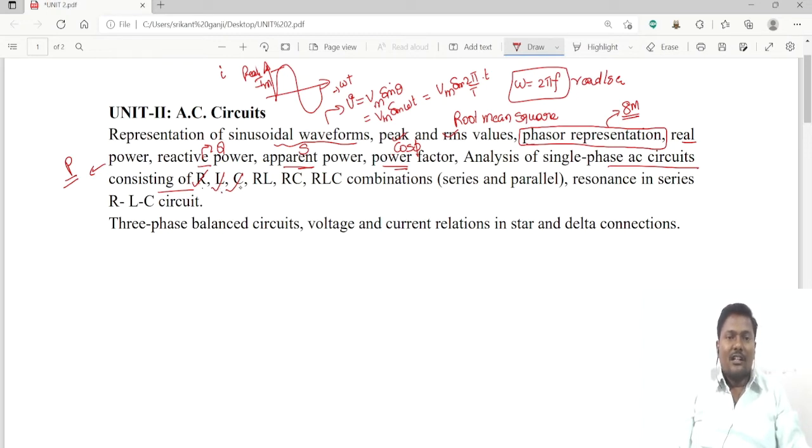Analysis of AC circuits consisting of RLC means consisting of pure resistor, pure inductor, pure capacitor, and RL series circuit, RC series circuit, or all RLC combinations. We can go for RL parallel circuit, RC parallel circuit, and RLC parallel circuits also. The most important topic is resonance - from this you may get 15 marks or 8 marks compulsory.